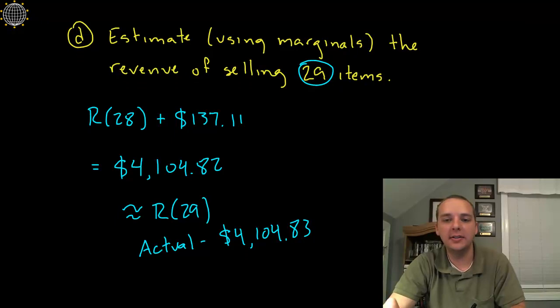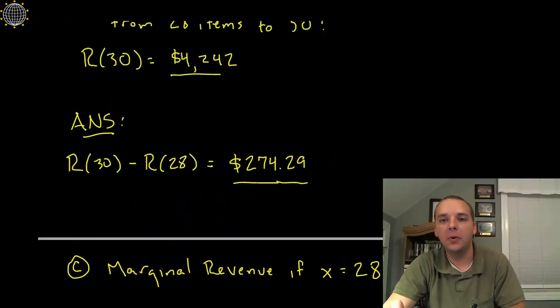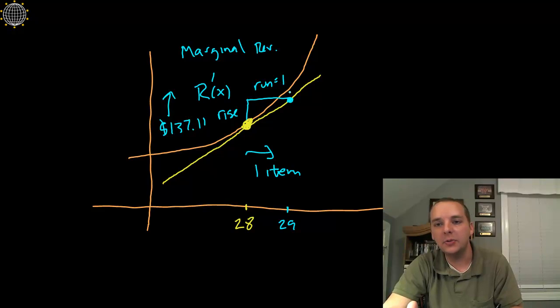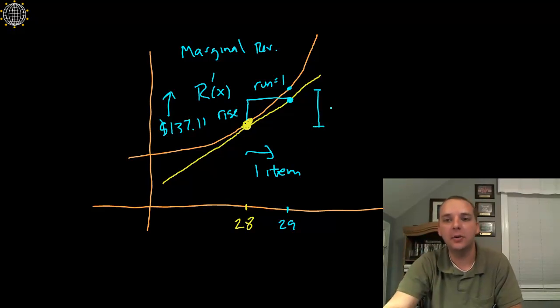Now, in case you're curious, where is this error even coming in? Well here, it goes back to this tangent line idea. See the actual change in cost, if you look just on the orange graph, not on the tangent line, this is the actual cost of the 29th item sold. This is an approximation of the cost of the 29th item.